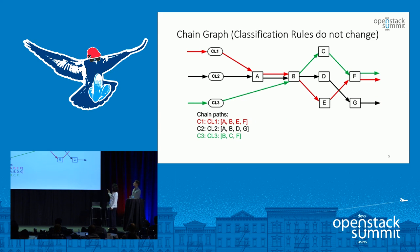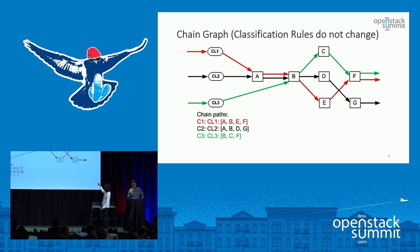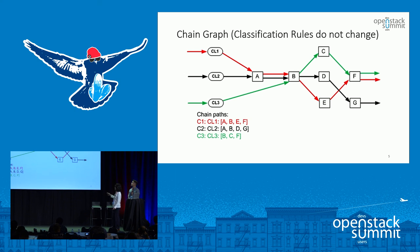Another case is when classification rules do not change. Here we have one chain where the red line shows the first port chain, black shows the second, and green shows the third. The first port chain is classified by flow classifier 1 and goes through service functions A, B, E, F. The second is classified by flow classifier 2 and goes through A, B, D, G. The third is classified by flow classifier 3 and goes through B, C, F. Some service functions handle multiple chains, and we can form a chain graph by grouping them together.